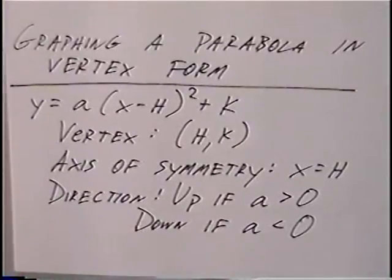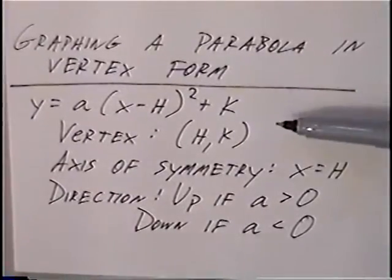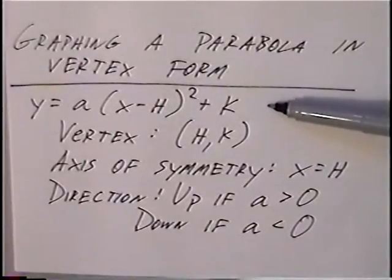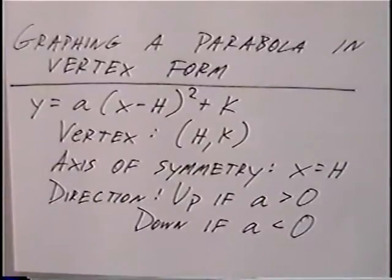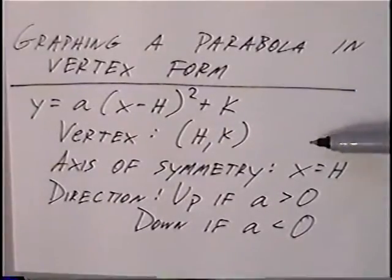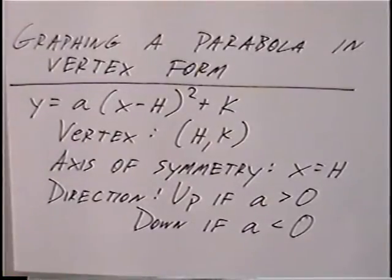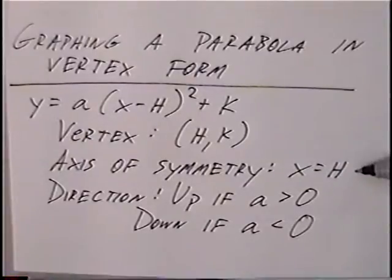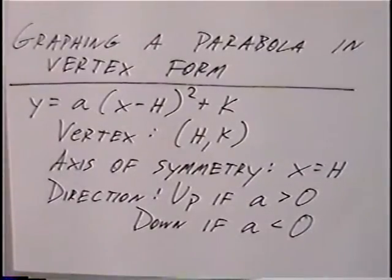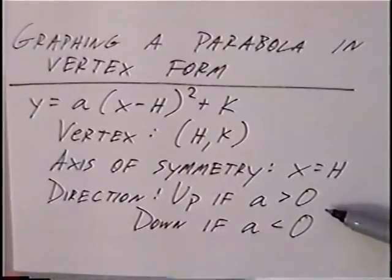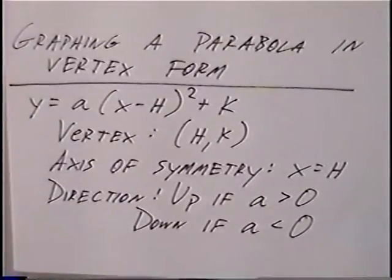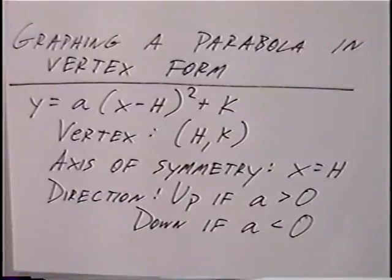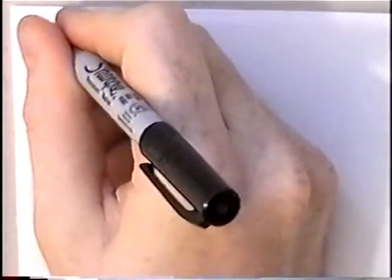Graphing a parabola in vertex form. The vertex form equation is y equals a times (x minus h) squared plus k. From the vertex form we can find the vertex, axis of symmetry, and direction. The vertex is the coordinates (h, k). The axis of symmetry is x equals h. The direction will be up if a is greater than zero, or down if a is less than zero.